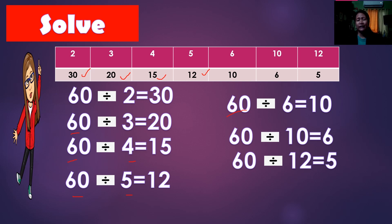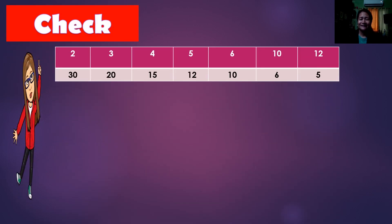60 divided by 6, the answer is 10. 60 divided by 10 is 6. And 60 divided by 12 is 5. Now, let us check the answer if this is correct.